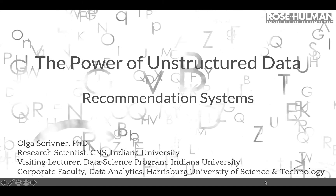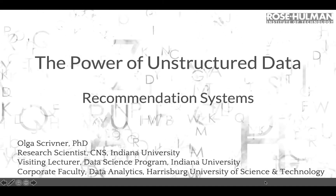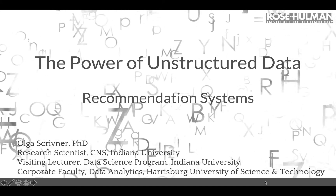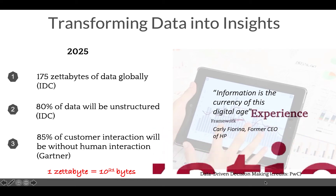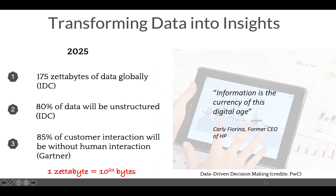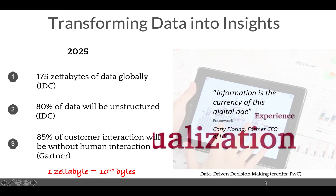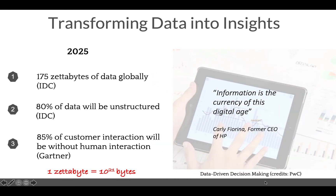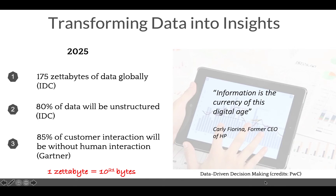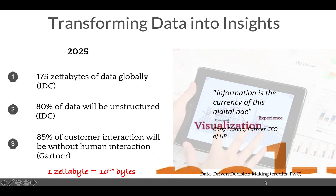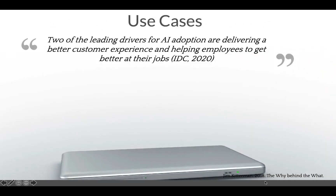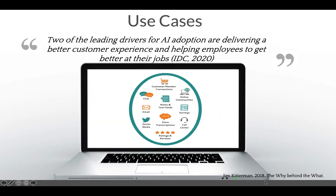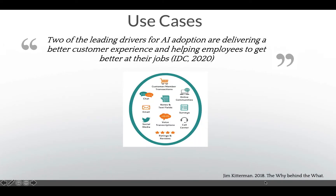The reason for talking about unstructured data recommendation systems is the growing demand for those skills in the job market. By 2025, International Data Corporation projects 175 zettabytes of data in the world, and 80% of this data will be unstructured. Information is the currency of this digital age, and to remain competitive, businesses are going through a digital transformation and AI adoption to transform data into insights. Two of the leading drivers for adoption are better customer experiences and helping employees get better at their jobs.